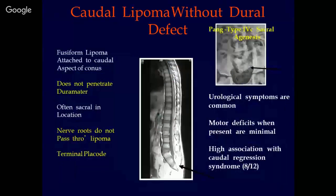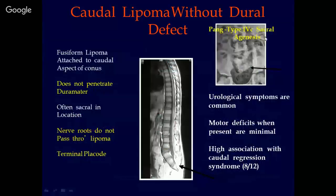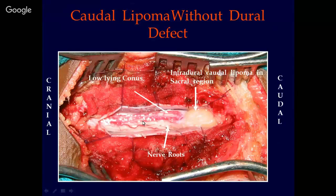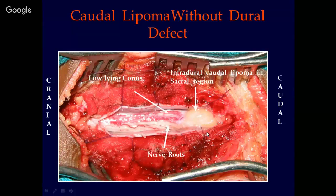Another example of a patient with caudal regression syndrome with type 4C sacral agenesis who had a caudal lipoma. There is a fusiform lipoma adhered to the caudal end of the conus medullaris, no subcutaneous mass, and the nerve roots do not pass through the lipoma. In this subgroup, motor deficits when present are minimal, whereas neurological symptoms are extremely common, and there is a high association with caudal regression syndrome. Nearly two-thirds of patients with caudal lipoma without dural defect will have caudal regression syndrome. Notice the absence of the filum, which is one of the characteristic features of caudal lipoma without dural defect.